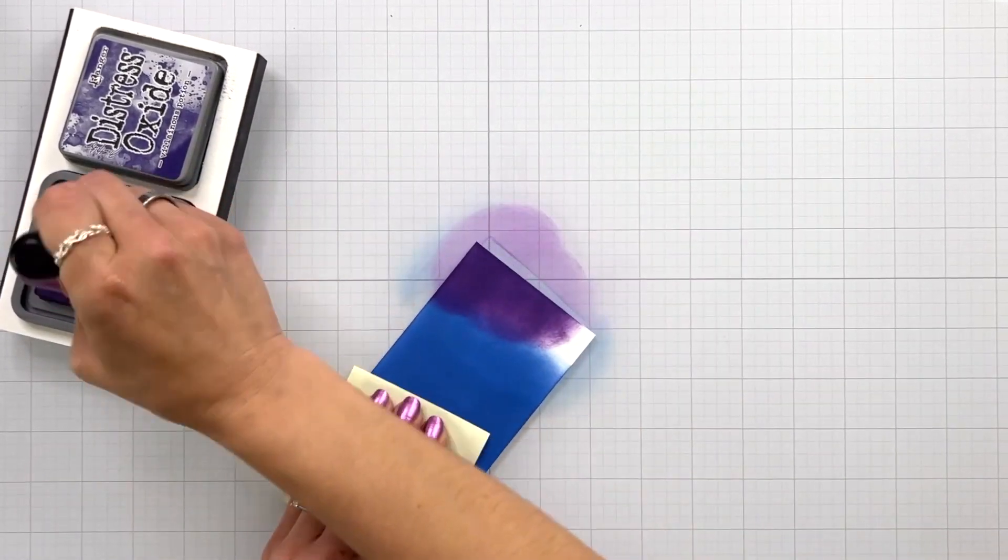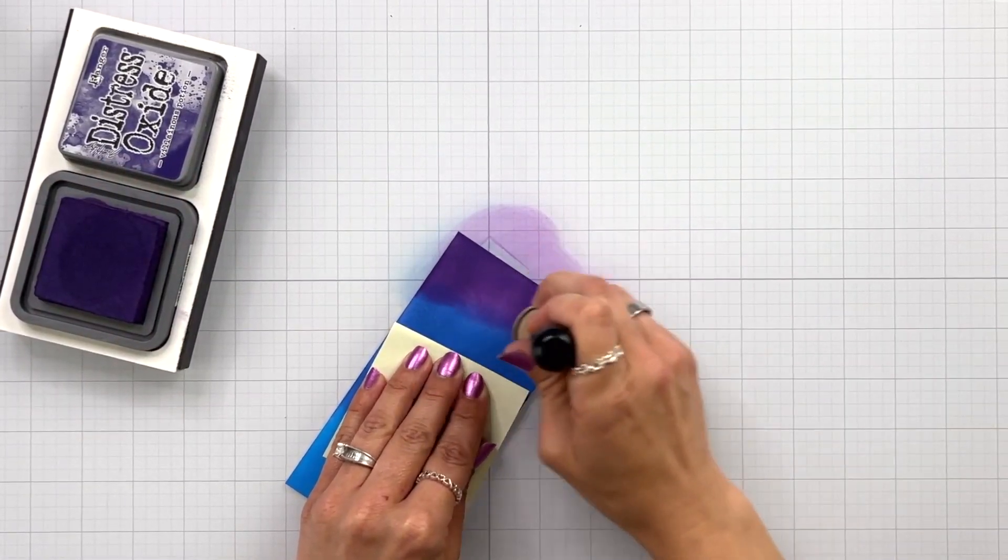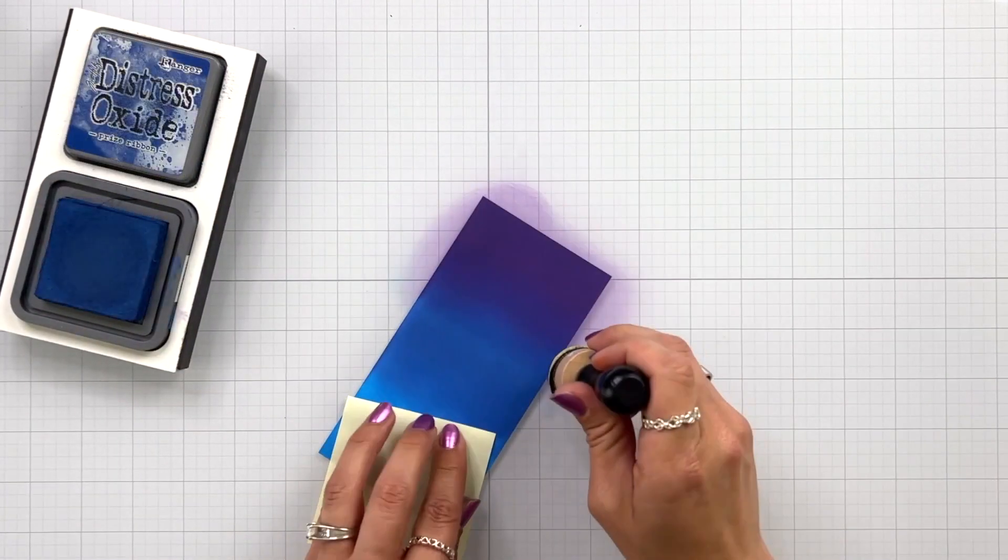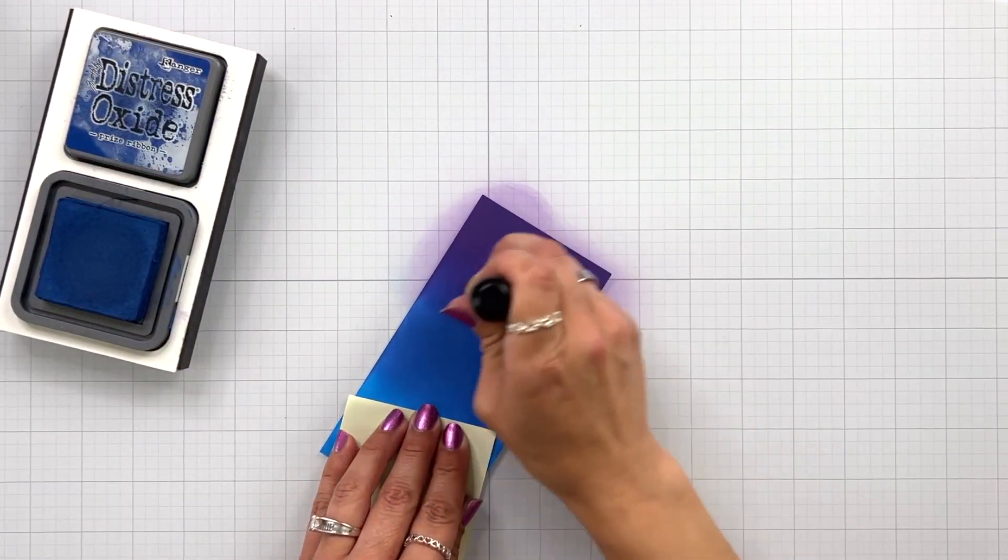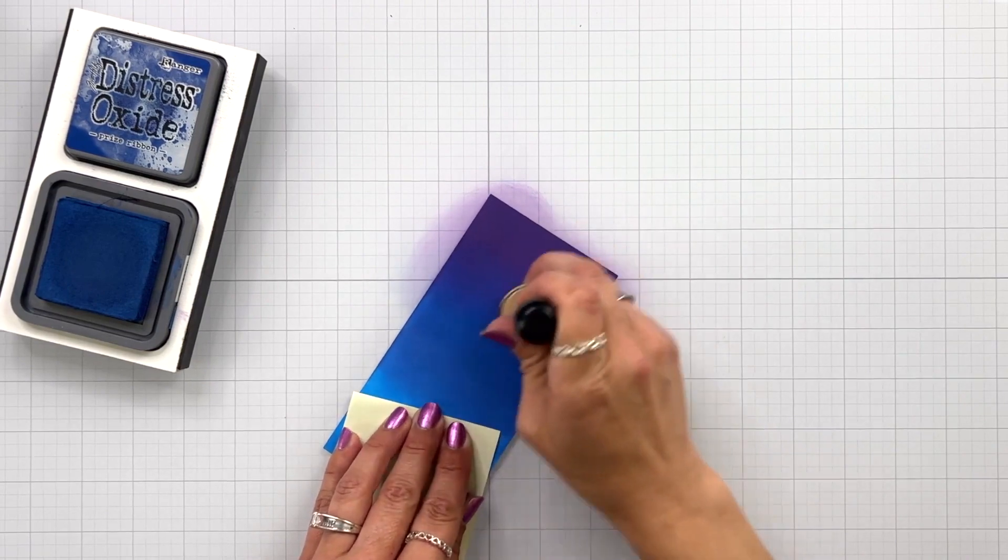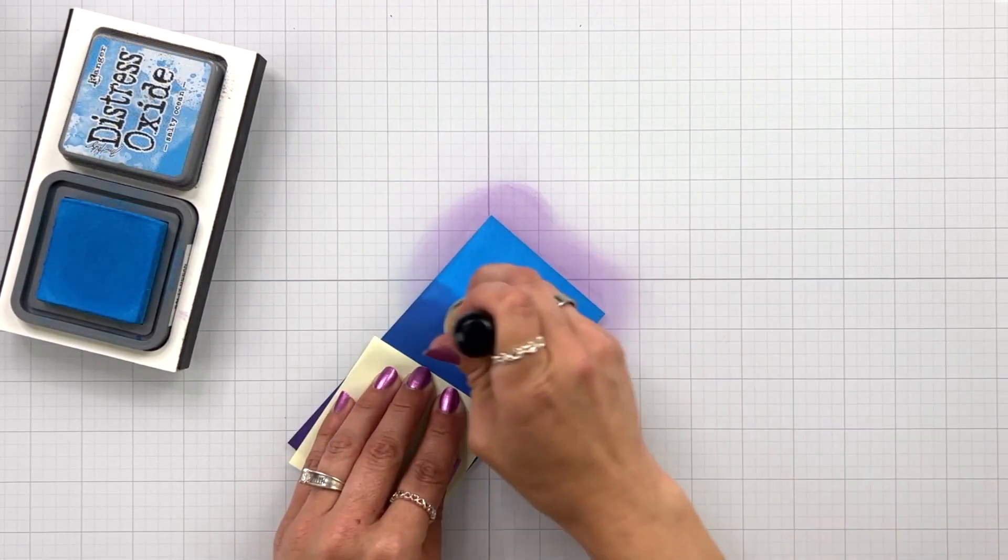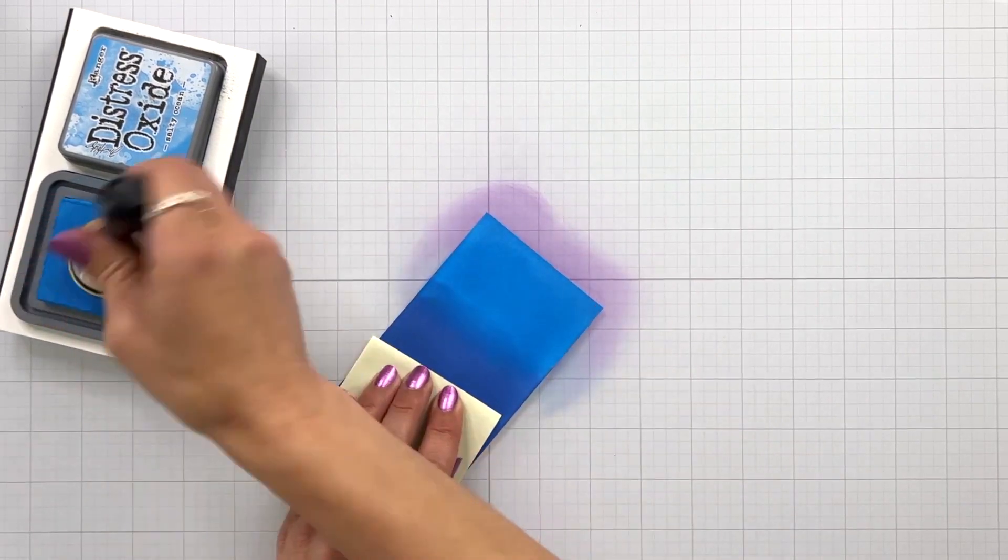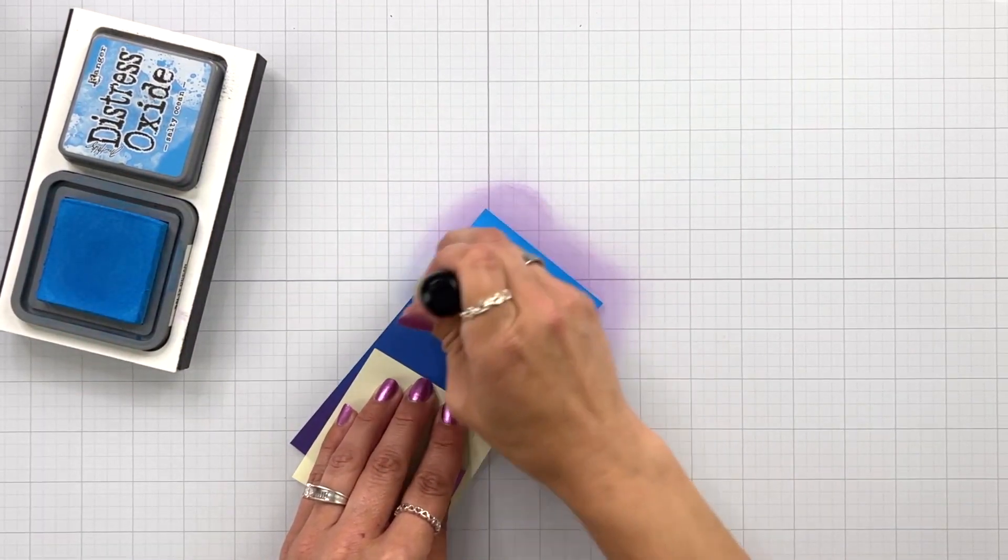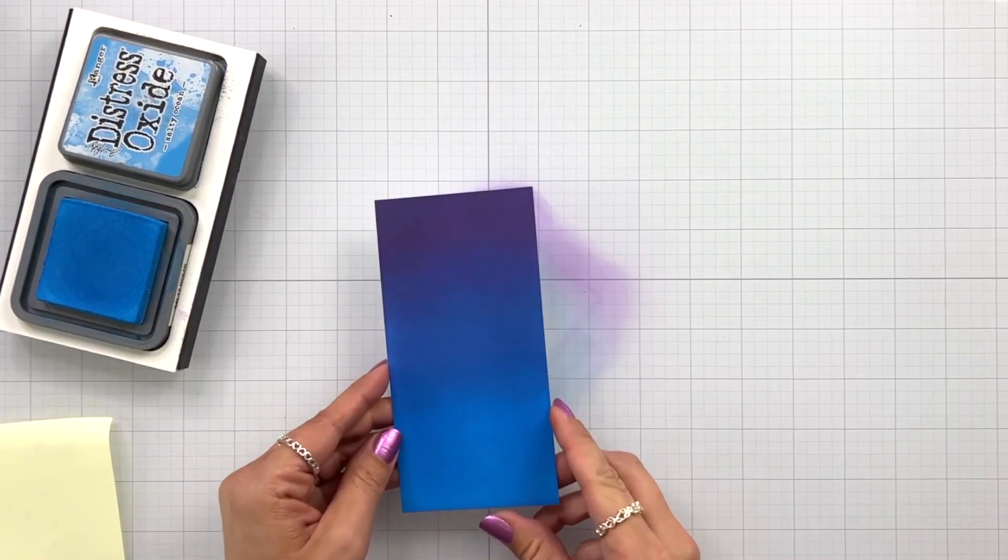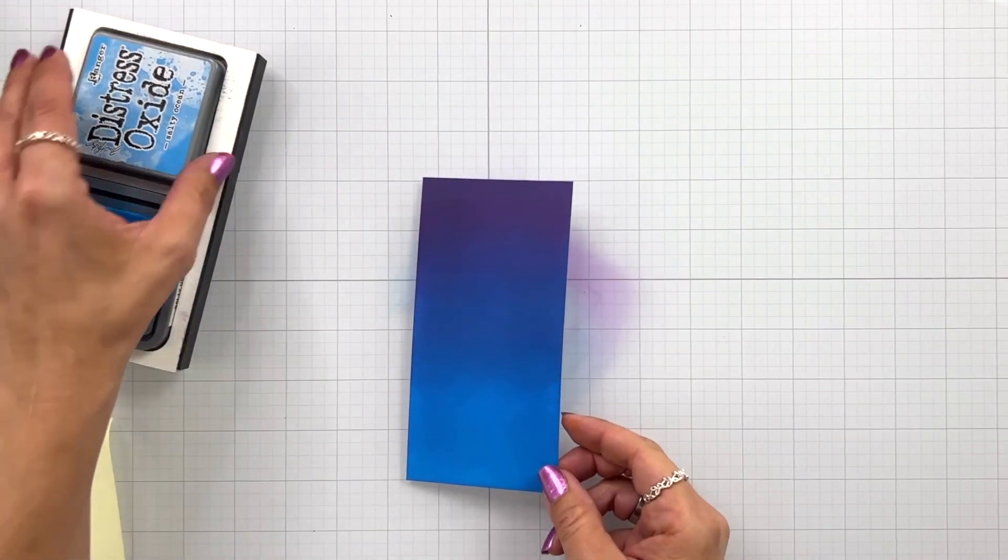With the Villainous Potion I'm going to blend into that Prize Ribbon, and I'm using a post-it note to protect my fingers since this will be completely covered in Distress Oxide ink and I don't want to leave fingerprints. After I did the purple I'm going back through those colors to help smooth out the transition.